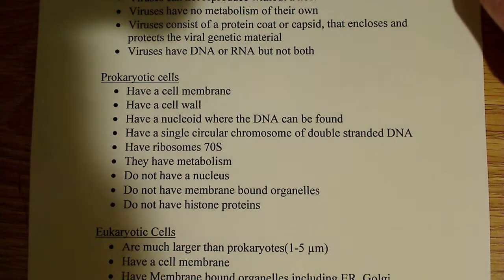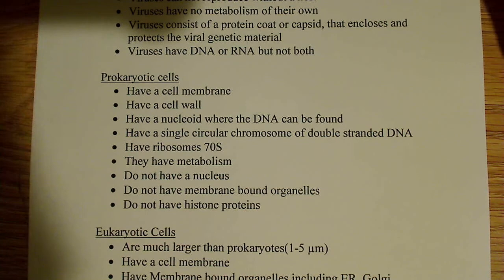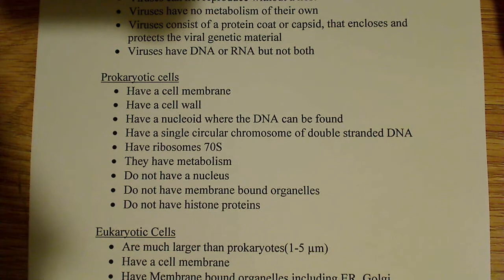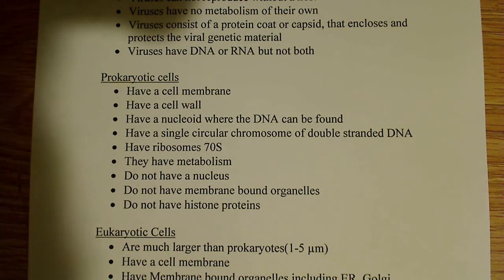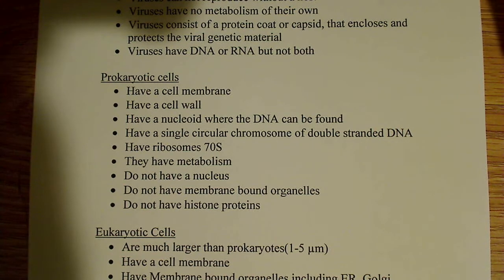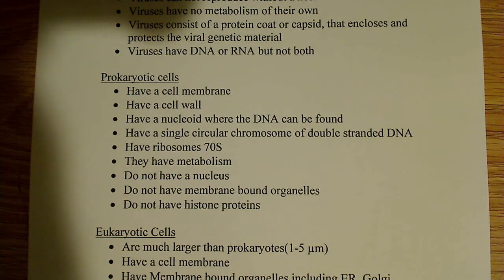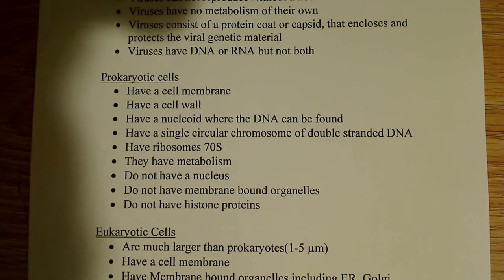Prokaryotic cells — we're talking now about bacteria. They have a cell membrane, but they also have a cell wall, and that cell wall is generally composed of peptidoglycan, which is basically a protein and polysaccharide component — it has two different components and makes up the cell wall. They also have what's known as a nucleoid, not a nucleus. It's not a membrane-bound structure; it's a region within the prokaryotic cell where the DNA can be found.